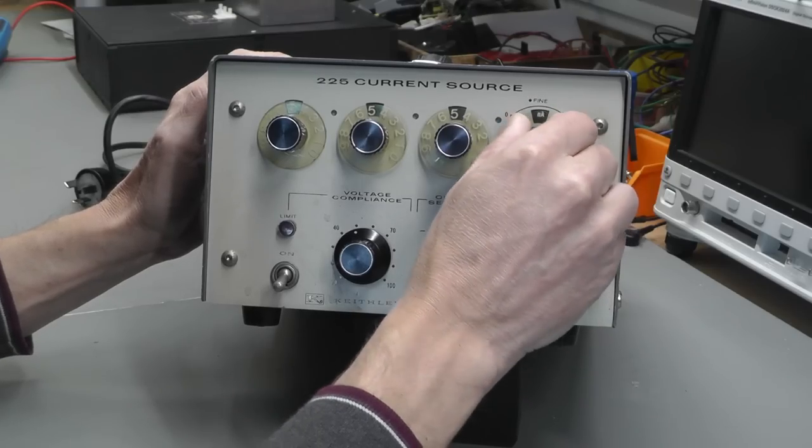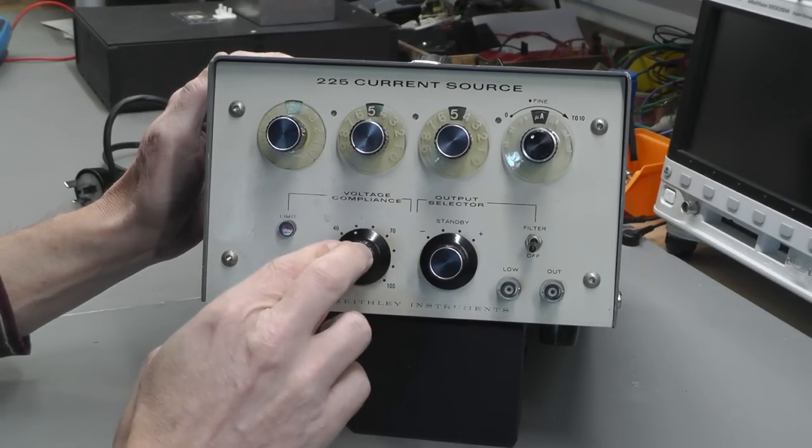So it's a current source. You've got the decade adjustment here at the top with the decimal point shown there, and you've got the range selector switch here going from milliamps all the way through to nanoamps. By adjusting that switch, you'll change the decimal point position. Down here you've got the output selector: either standby, negative output, or positive output. You've got a filter switch here that adds a capacitor across the main output.